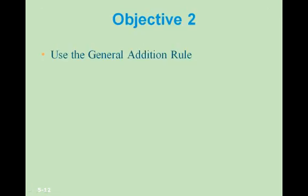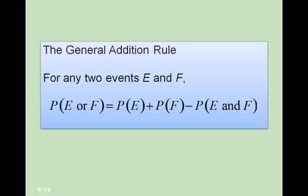Objective 2: use the general addition rule. The general addition rule states that for any two events E and F, P(E or F) = P(E) + P(F) − P(E and F), where P(E and F) represents the overlap between the two events.